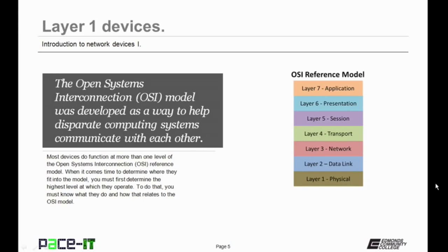We're going to be discussing the bottom three layers — Layers 1, 2, and 3 today. Most devices do function at more than one layer of the OSI reference model. But when it comes to determining where they fit into the model, you must first determine the highest level at which they operate, because that's where they fit into the OSI model.